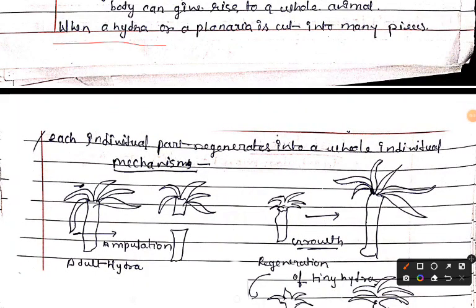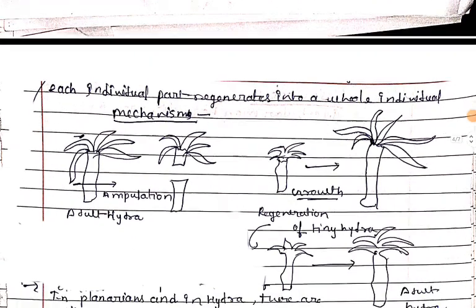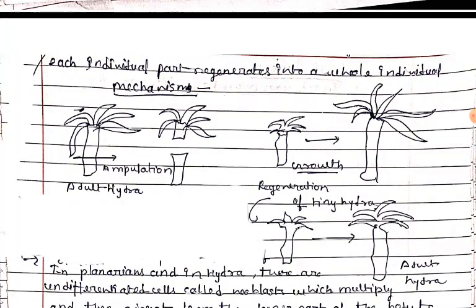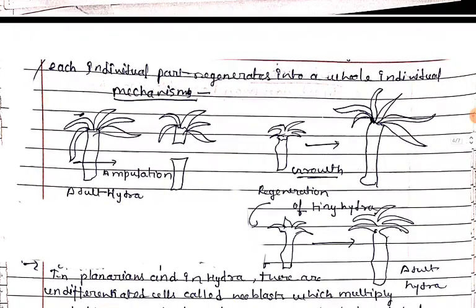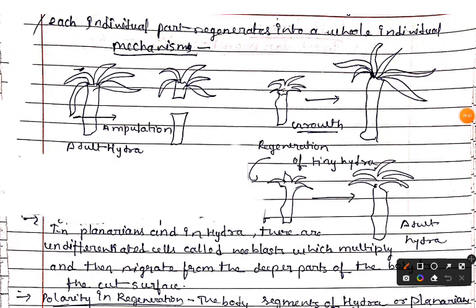When a hydra or a planaria is cut into many pieces, each individual part regenerates into a whole individual — meaning each fragment develops into a complete new organism. Looking at the mechanism, you can see the adult hydra is cut from different points. The pieces that are cut from the adult each develop into a separate individual.